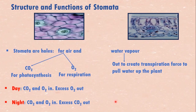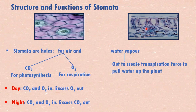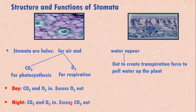Let's talk about the structure and functions of the stoma. The stomata are holes — air will move in and out. We need carbon dioxide to move in to be used for photosynthesis, and oxygen also to move in for respiration. During the day when there's sunlight, both carbon dioxide and oxygen move in; the carbon dioxide is used for photosynthesis and produces oxygen, which goes out. In the night there's no photosynthesis, so any excess carbon dioxide will be removed and go out through the stomata.